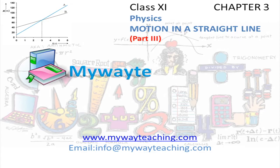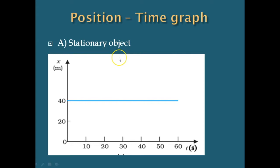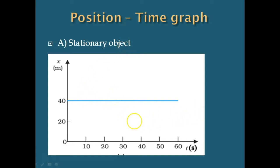This video is brought to you by mywayteaching.com. Let us see some of the position-time graphs. Motion of an object can be represented by a position-time graph. For motion along a straight line, say the x-axis, only the x-coordinate varies with time, and we can have this x-t graph.